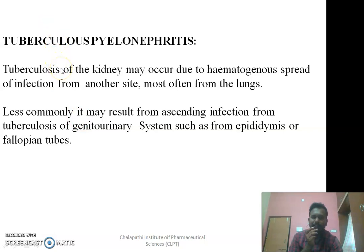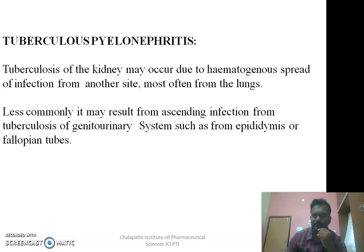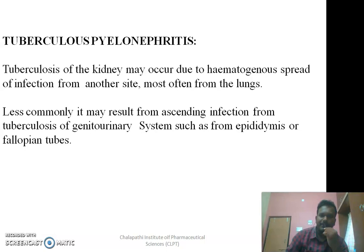Coming to tuberculosis pyelonephritis — this is not different from normal acute pyelonephritis, except that the microorganism changes from normal bacteria to Mycobacterium tuberculosis. This Mycobacterium tuberculosis may enter the kidneys and cause infection either from a systemic source or from the genitourinary system. If the individual is suffering from genitourinary tuberculosis, from the genitourinary system the infection will affect the kidneys, resulting in tuberculosis pyelonephritis. Sometimes, if there is tuberculosis affecting the epididymis or fallopian tubes, that may also spread to the kidneys, resulting in tuberculosis pyelonephritis.